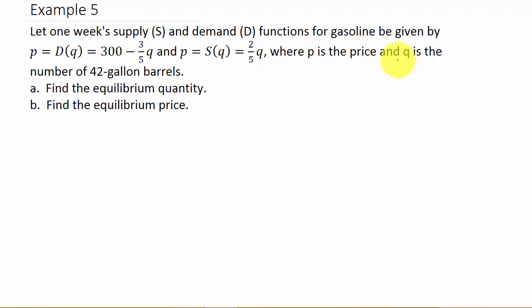where P is the price and Q is the number of 42-gallon barrels. So Q represents a barrel, and one barrel holds 42 gallons.